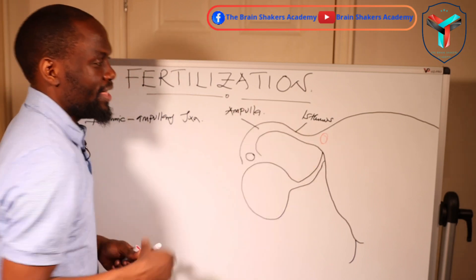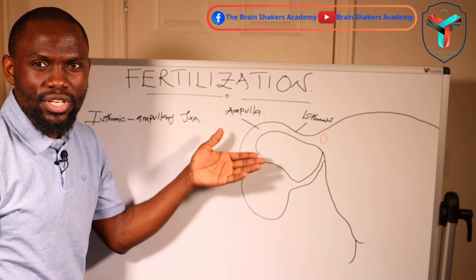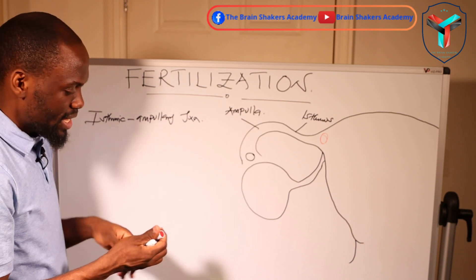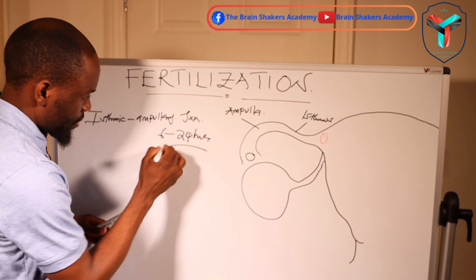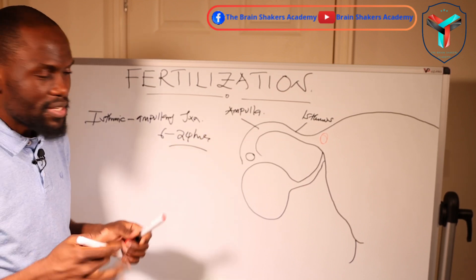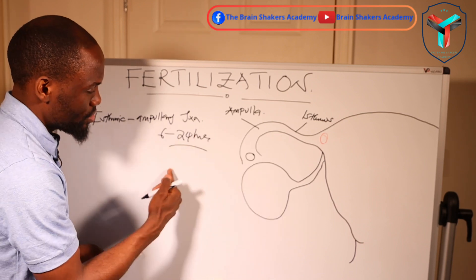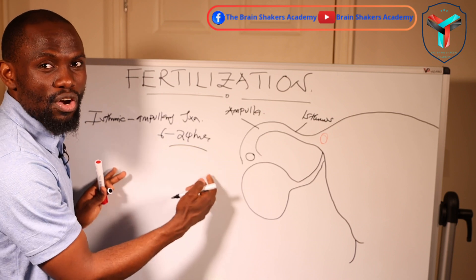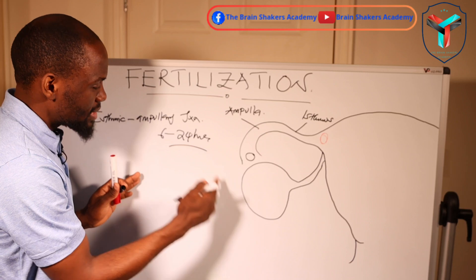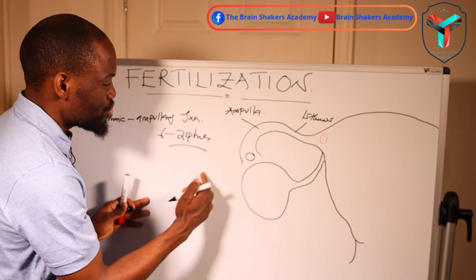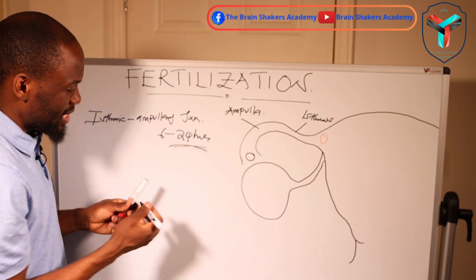Once the ovum has reached the isthmic ampullary junction, it will only remain viable for a period of about 6 to 24 hours. Within that window, if coitus happens prior to ovulation, there is a higher chance of pregnancy. If the sexual act happens after ovulation, it should be within the first 24 hours to maximize the chances of pregnancy.